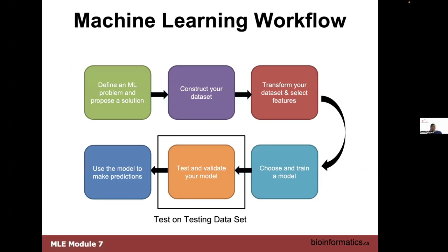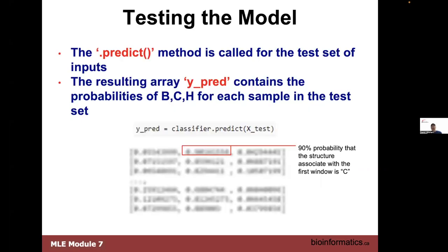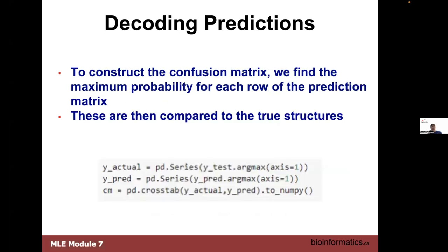Again a huge shrinkage in terms of the amount of code needed because we're just using these Keras functions. We're using the predict method to allow us to both test and validate — the predict call takes the test inputs and the resulting array gives us the probabilities of B, C, and H in each of the test set. We also have to create our confusion matrix, so we're trying to predict the probability of each row in the matrix and then compare them to the actual structures from the PPTDB.